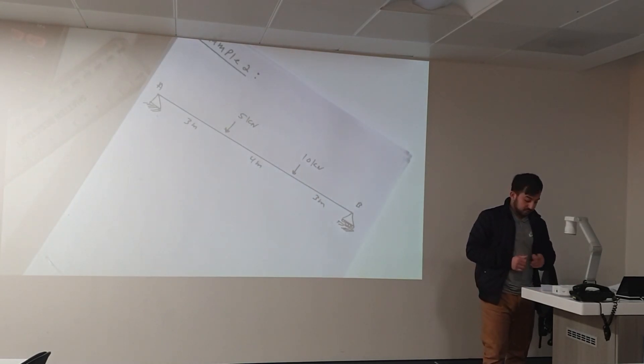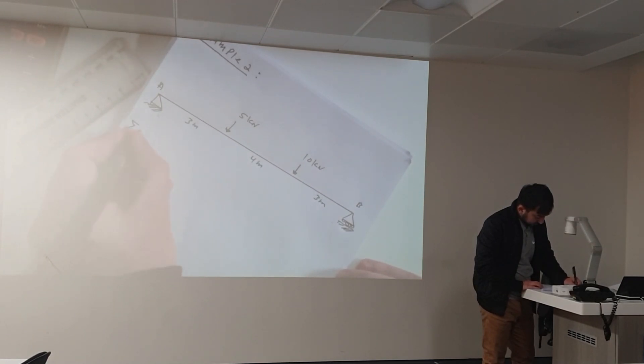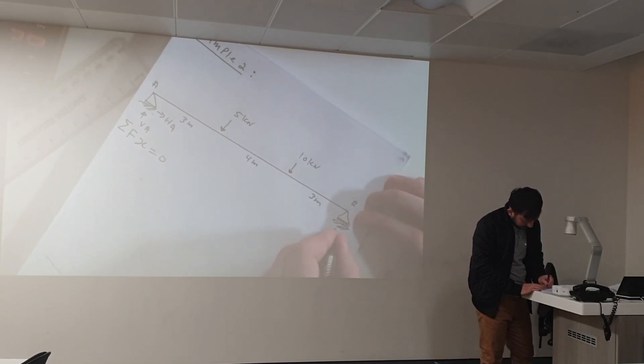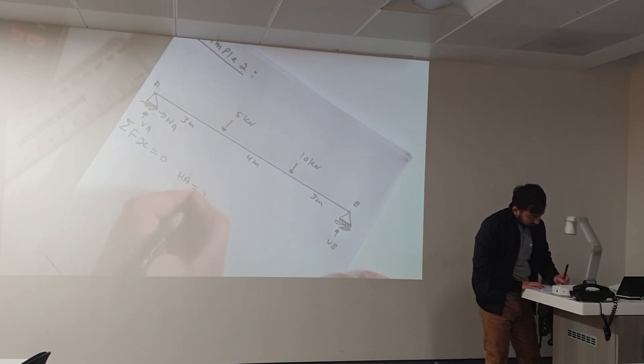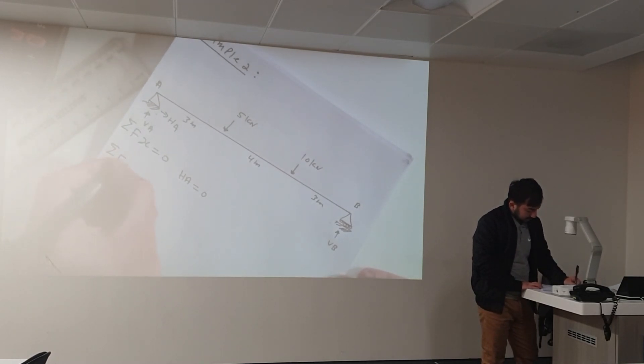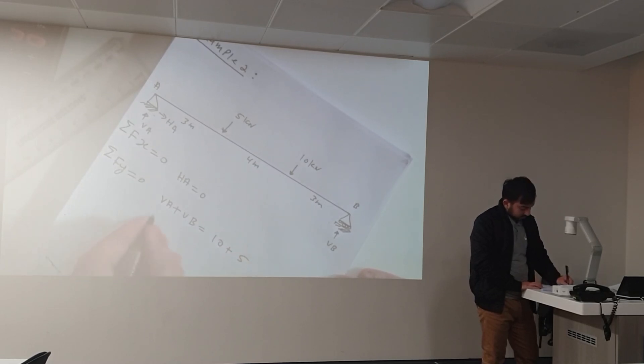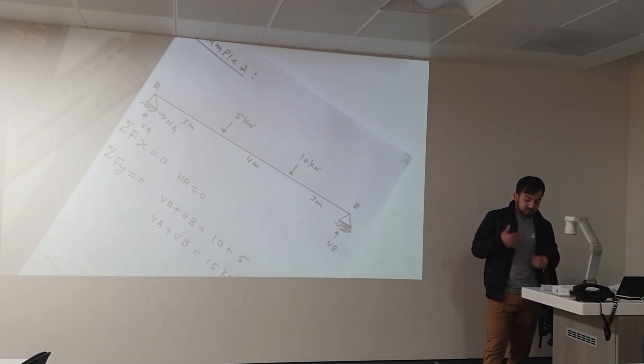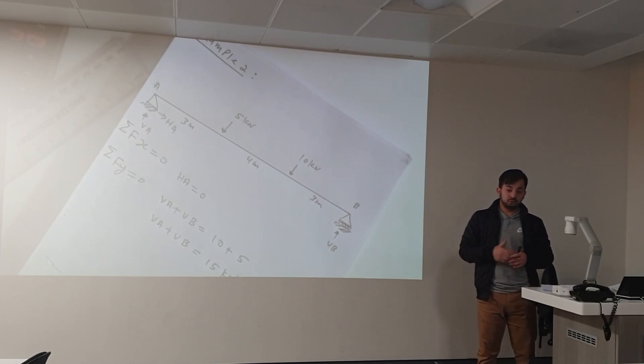We have to do the same procedure again. Sum of Fx equals 0. We have VA, HA, and VB. So HA is equal to 0 because we don't have any force acting horizontally. Second step, we have to take summation of forces in y. Sum of Fy equals 0. So we have VA plus VB is equal to 10 plus 5, which means VA plus VB is equal to 15 kilonewtons.